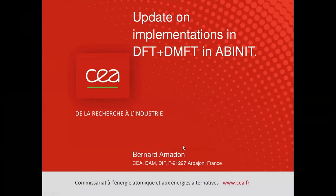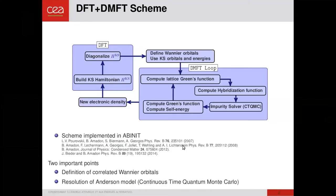First of all, let me outline the DFT plus DMFT scheme. In DFT, the main idea is to, from the starting density, compute the Hamiltonian, diagonalize it from the diagonalized wave function to recompute the density. This is the DFT loop.